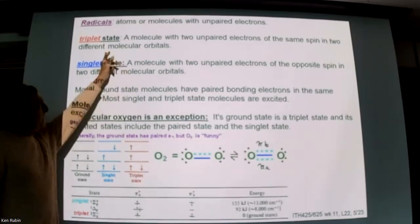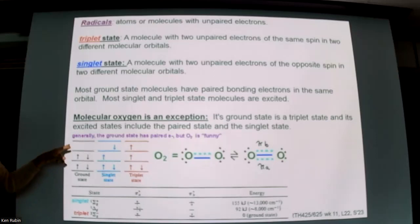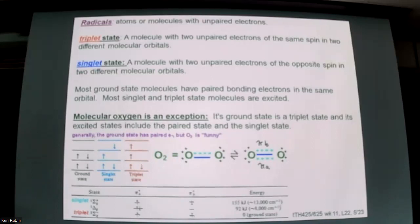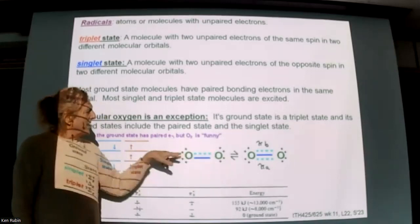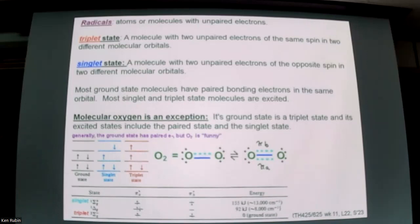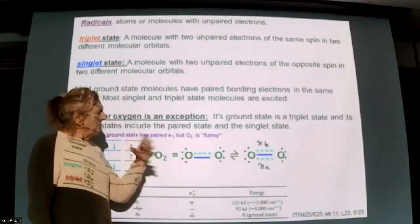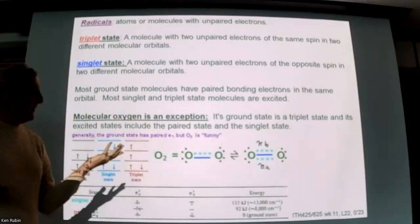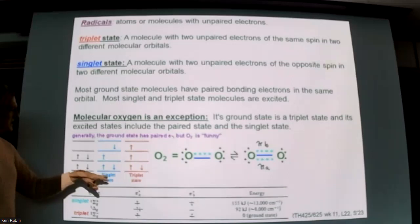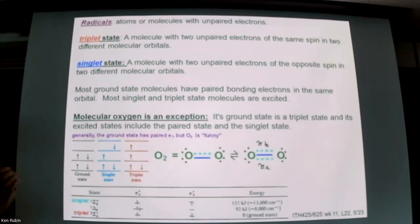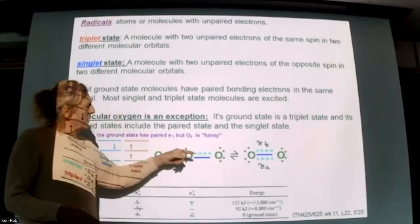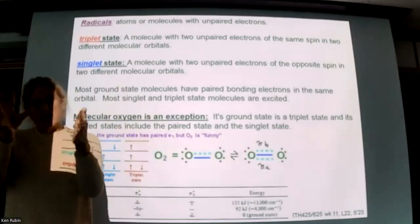For both molecules, the ground state has electrons in molecular orbitals paired according to the Aufbau principle — one electron spinning up, one spinning down. Unpaired electrons usually indicate an excited state. You can flip the spin on an electron without even promoting it to a different orbital, and that can be an excited state. For oxygen specifically, the ground state is actually a triplet state, and this makes oxygen way more reactive than nitrogen — it can flip back and forth between singlet and triplet states.